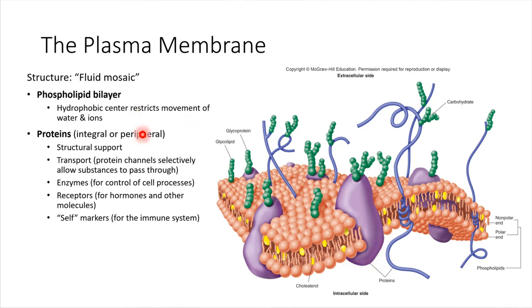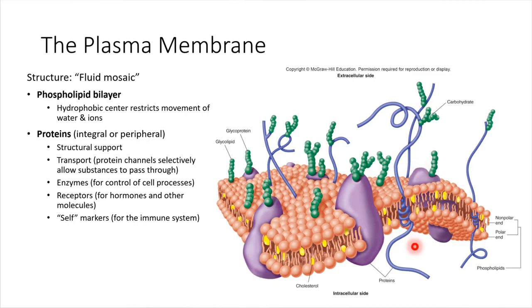Peripheral proteins don't necessarily span the whole way across. For example, this one sticks out on one side of the plasma membrane but not on the other. Here's another peripheral membrane protein — it's embedded in one half but doesn't span the entire way across.